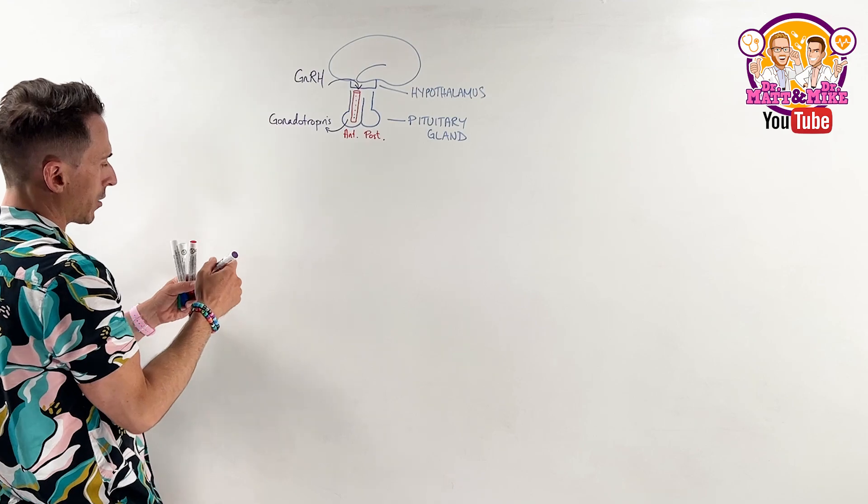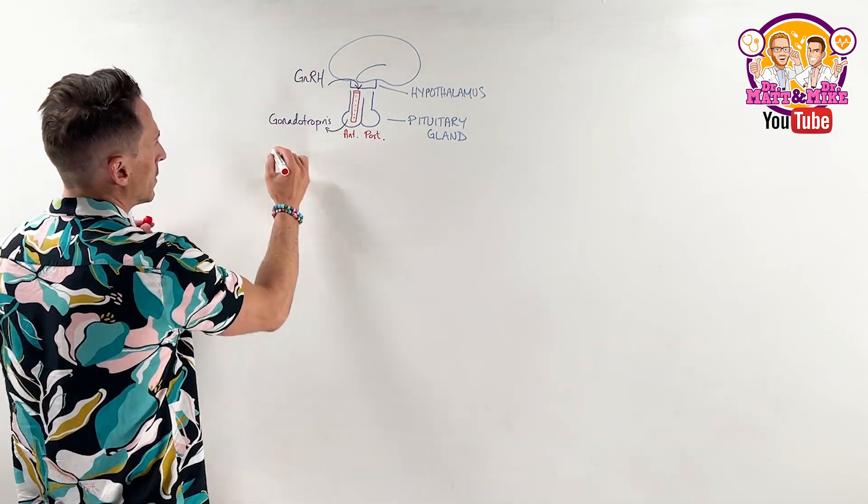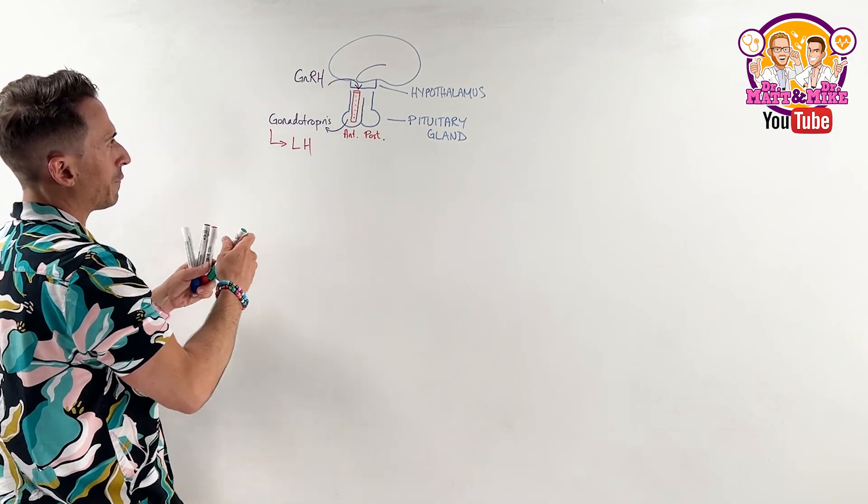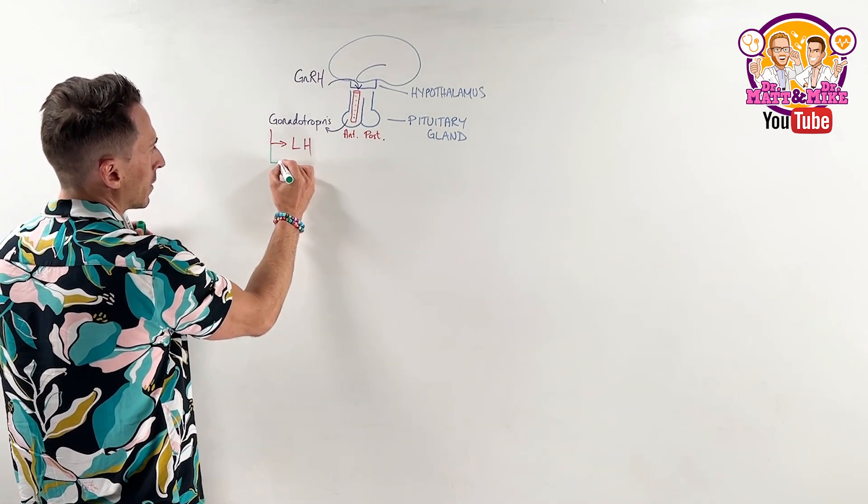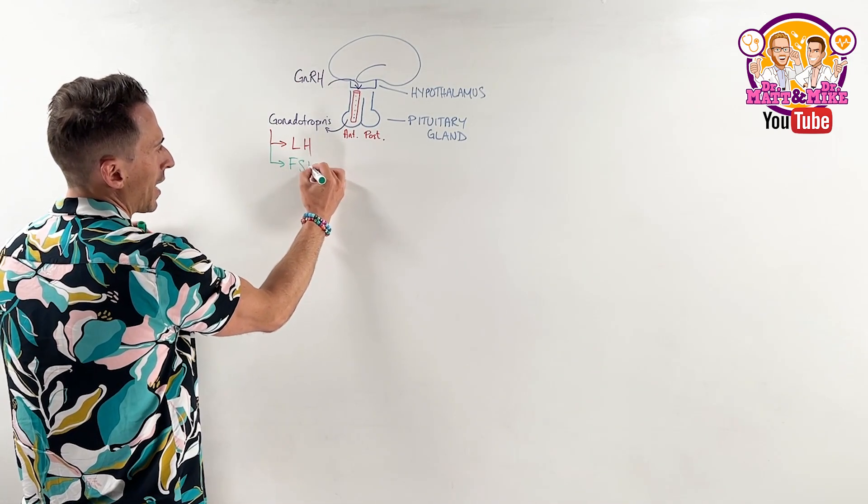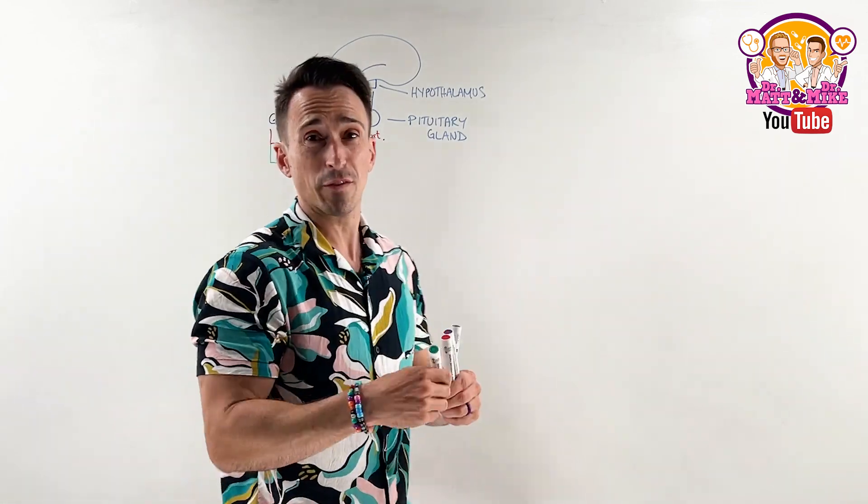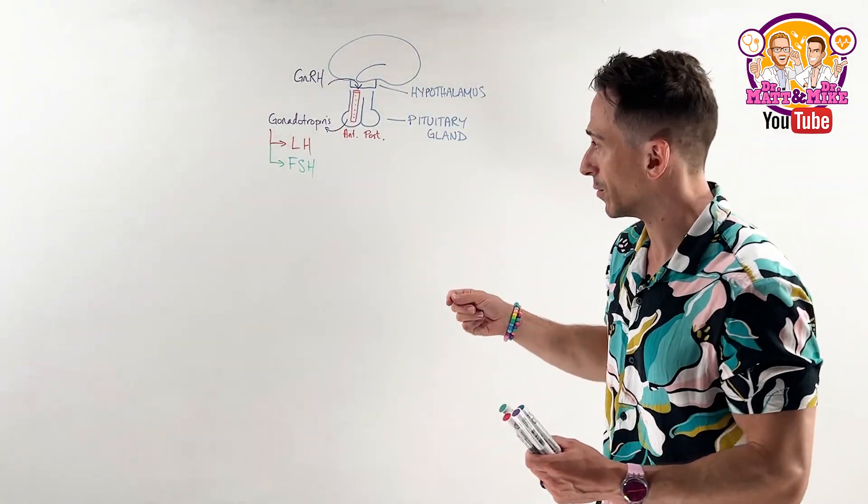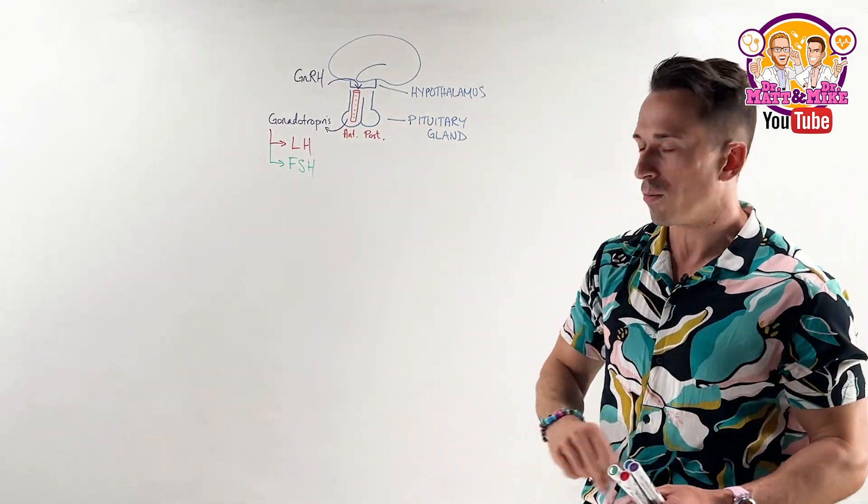Now there's two gonadotropins. There is what we call luteinizing hormone and there is follicle-stimulating hormone. And they are named after what they do in the female reproductive system. That's great because that's what we're focusing on today. Luteinizing hormone, follicle-stimulating hormone.